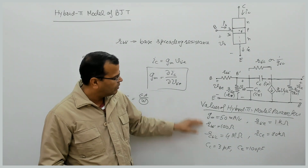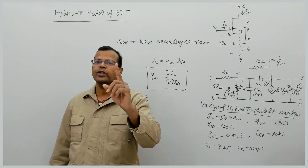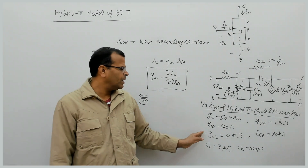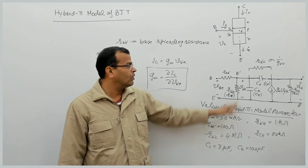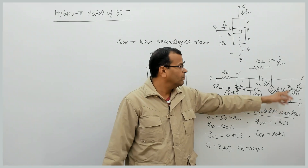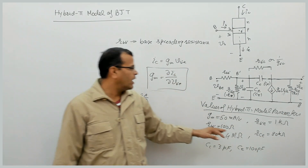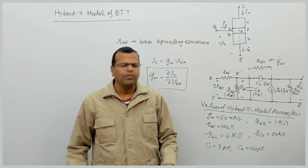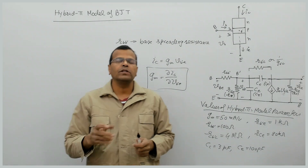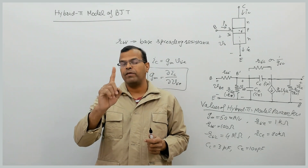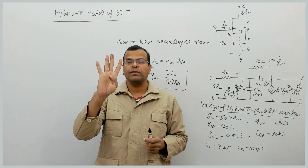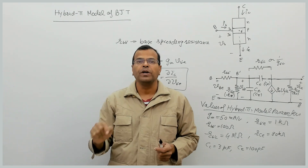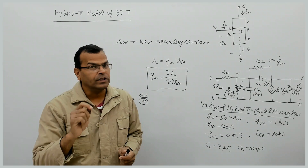Just relatively, you can remember the parameter values: R_B'C is largest (reverse biased), then RCE (Early effect), then R_B'E, then RBB' (smallest). There was a matching-type question in engineering services based on these relative values of the four parameters, so remembering the relative comparison is useful.